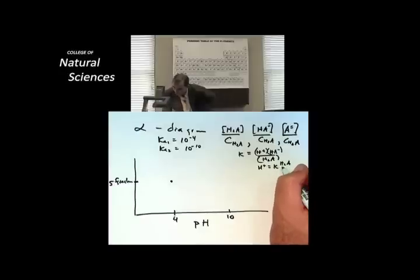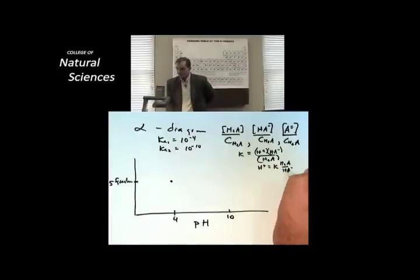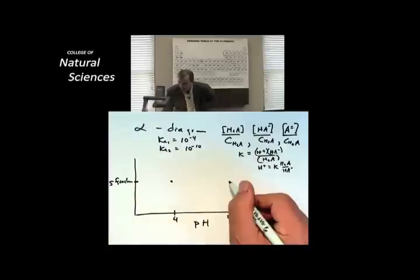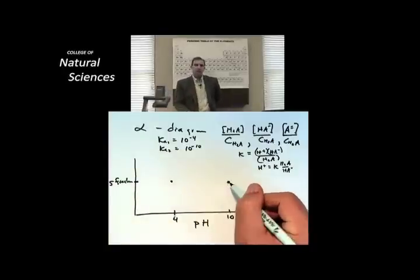If I've got equal amounts of these, a 50-50 mixture of these, half of each of these, then the pH is the pK. That's right, I remember doing that. I've done that constantly when I'm doing titration curves and everything else. So I've got a 50-50 mixture of H2A and HA minus at pH 4 and I've got a 50-50 mixture of HA minus and A double minus at pH 10.